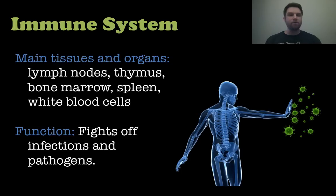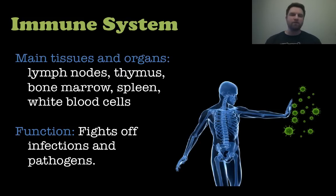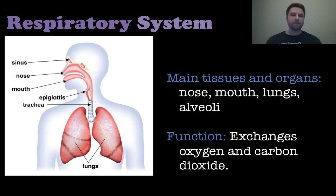Next we have the immune system, which includes lymph nodes, the thymus, bone marrow, spleen, and white blood cells. This is the system that protects your body and fights off all the infections and pathogens — things that can infect your body and make you sick. So your immune system is very, very helpful with that.